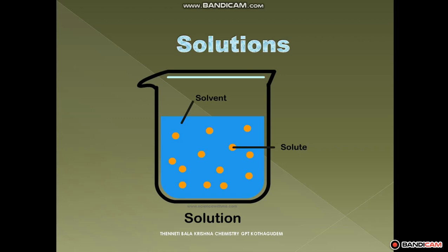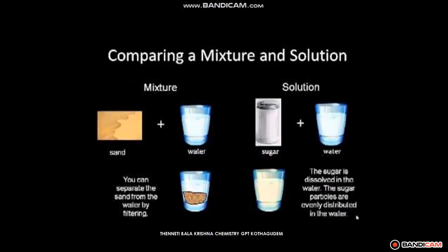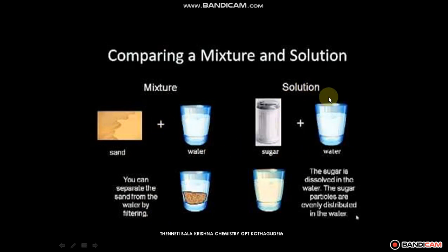The solution is a mixture of solute and solvent. So what is the difference between a mixture and a solution? A mixture is a heterogeneous compound, whereas a solution is a homogeneous compound. Example for mixture: sand and water. In this mixture, we can separate one component from another — you can separate the sand from the water by filtering. Such type of mixture is called a heterogeneous mixture. A homogeneous mixture is called a solution.